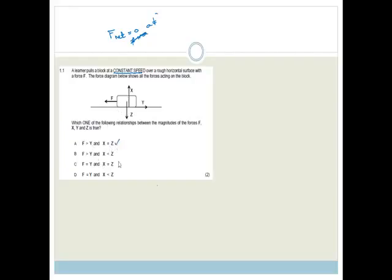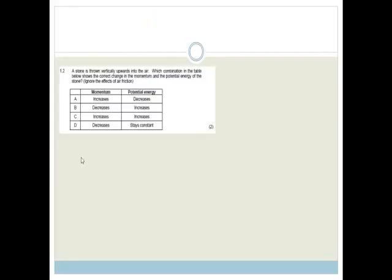There is no acceleration. Now it says, which one of the following relationships between the magnitudes of the forces F, X, Y, and Z are true. Do you agree that X and Z have to be equal? So we've eliminated two of the options. Now let's talk about F and Y. If there is a constant speed, then net force is zero, which means the force forward has to equal the force backwards. So therefore, the correct answer has to be C.